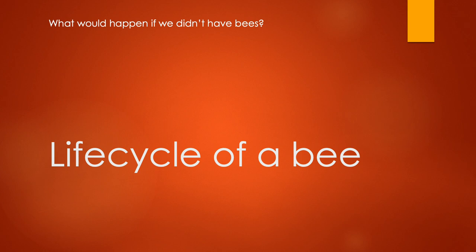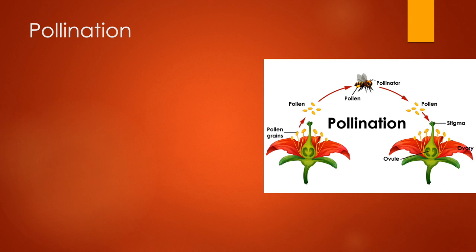Good afternoon everyone. We are still working towards our main question of what would happen if we didn't have bees. Today's lesson we're looking at the life cycle of a bee, and last week we looked at pollination, and we're going to look at when in the life cycle of a bee pollination would occur. So just a quick recap on pollination.